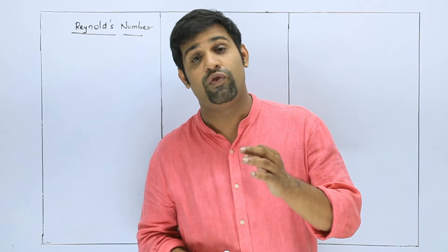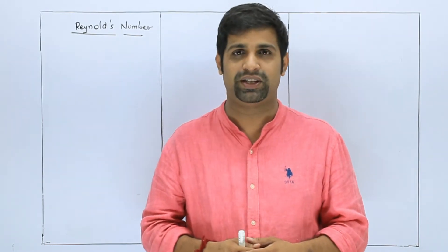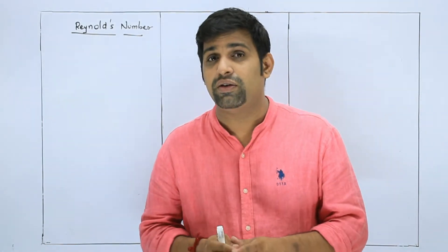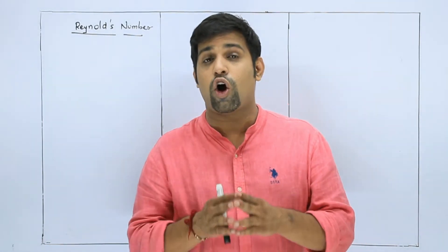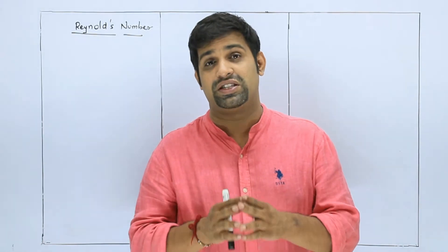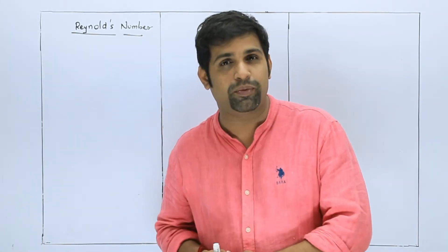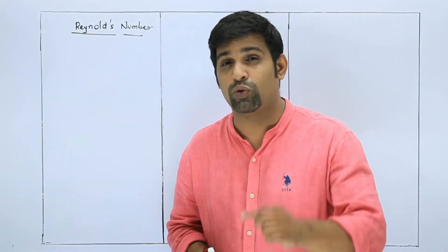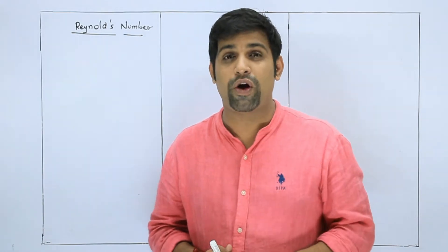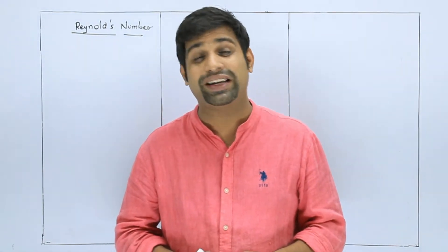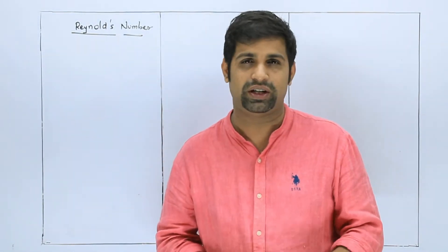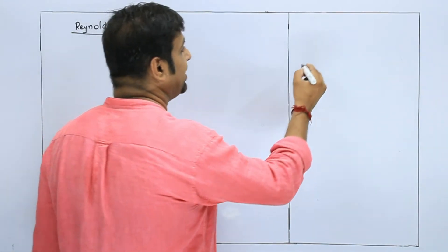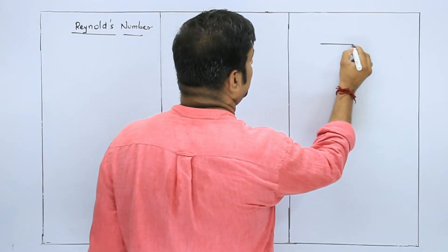We will know from velocity. The velocity of streamline and turbulent depends upon one type of velocity — that is called critical velocity. I will talk about that example.